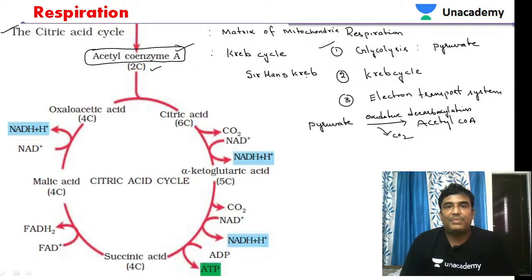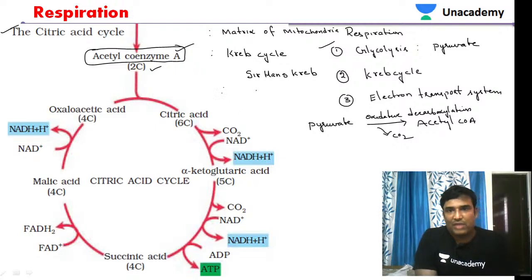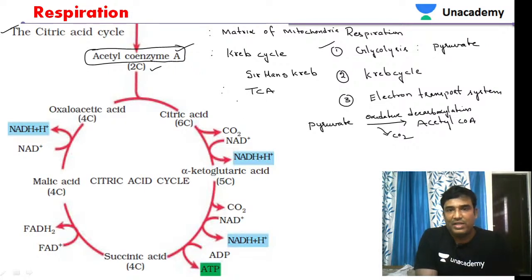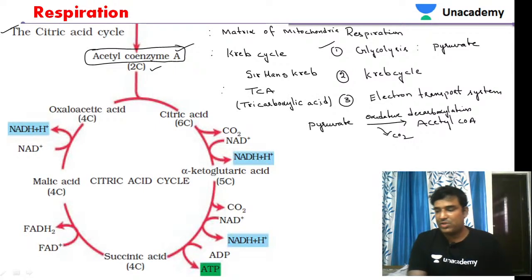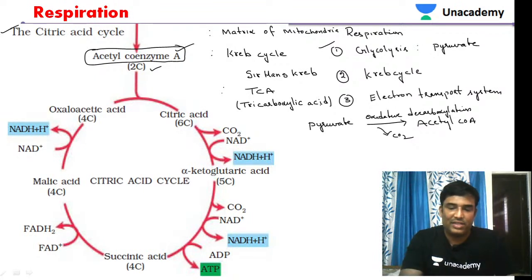So this cycle is called the Krebs cycle. It is also called the TCA cycle, whose full form is tricarboxylic acid cycle. Citric acid has three carboxylic groups, which is the reason it is also called the tricarboxylic acid cycle.